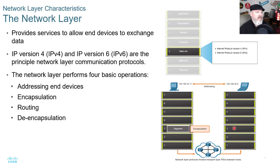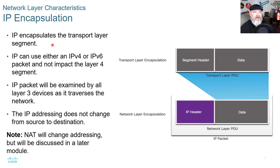IP encapsulates the transport layer segment. IP can use either V4 or V6 without impacting the Layer 4 segment. The IP packet will be examined by all Layer 3 devices as it moves along the network. The IP addressing does not change from source to destination. The transport layer encapsulation includes the segment header and data, which Layer 3 then encapsulates.